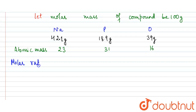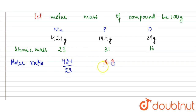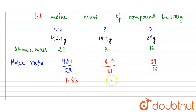Now we calculate the molar ratio. We have the given mass and the atomic mass, so the molar ratio is: sodium = 42.1 / 23, phosphorus = 18.9 / 31, oxygen = 39 / 16. Working to two decimal places, that gives 1.83 for sodium, 0.60 for phosphorus, and 2.43 for oxygen.